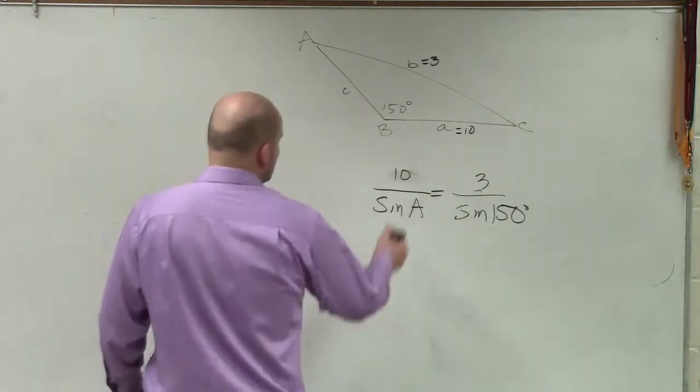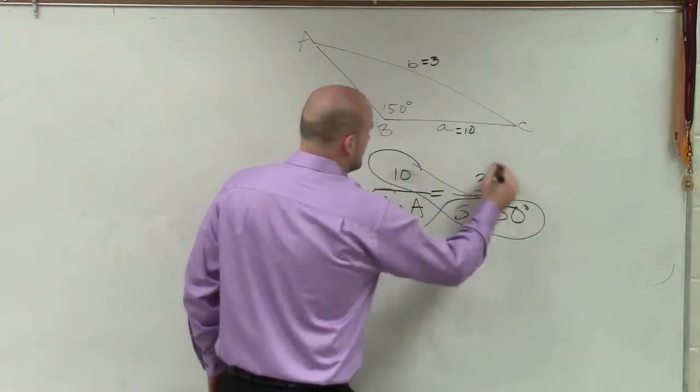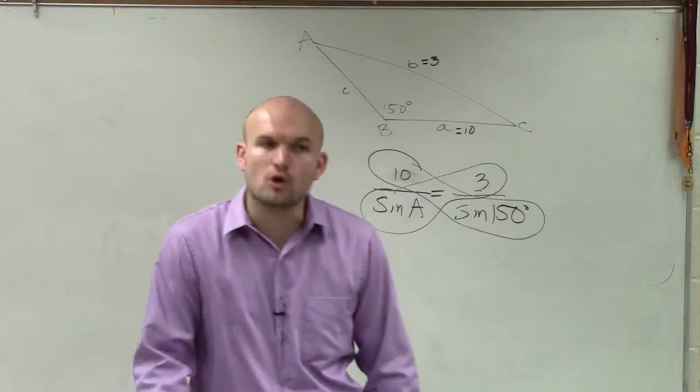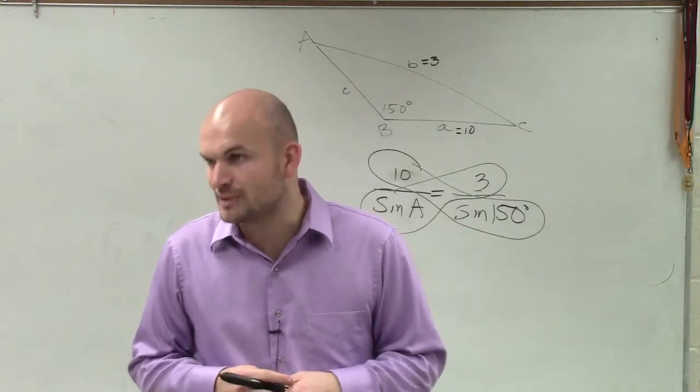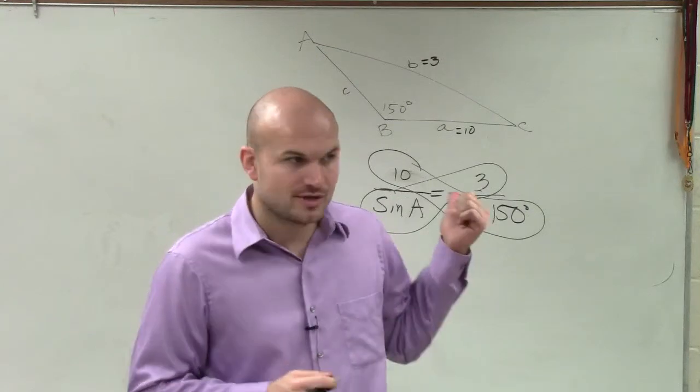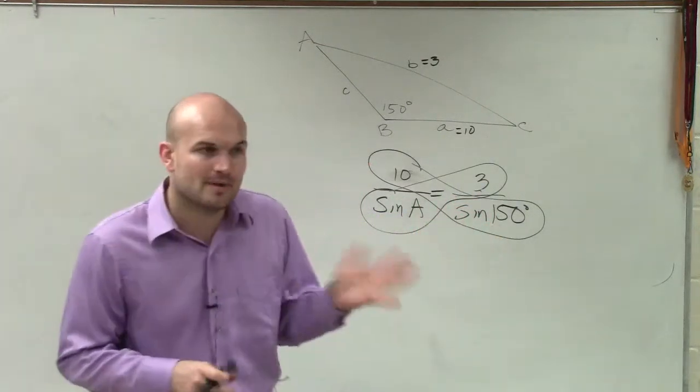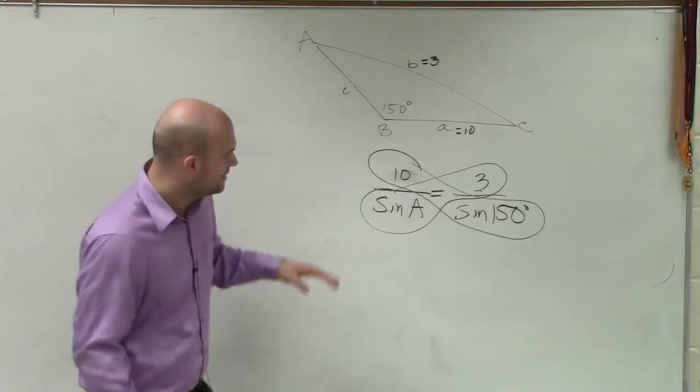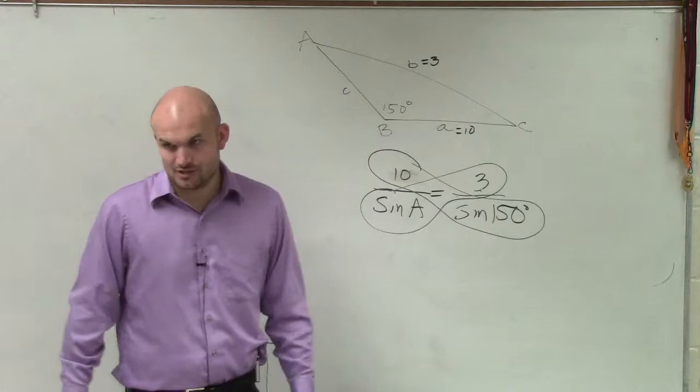So now I can apply cross multiplication. Why can I apply cross multiplication? Because I have a proportion. And that is the only time you can apply cross multiplication. Because those are not fractions. You're not multiplying fractions. You are solving for a proportion. And cross multiplication is just a little gimmicky way to show the operation.